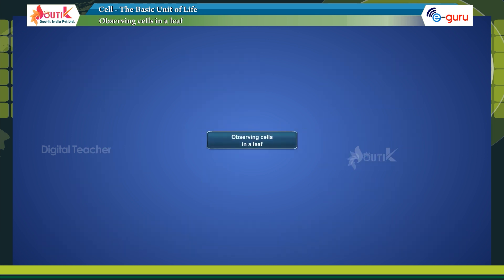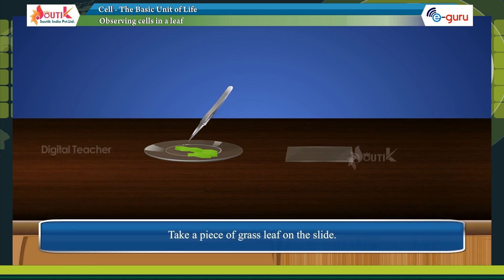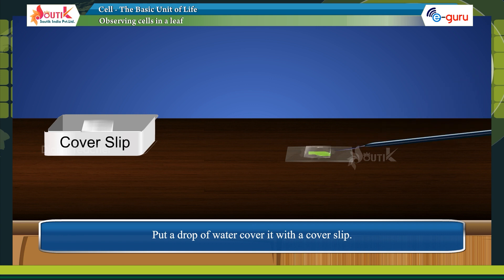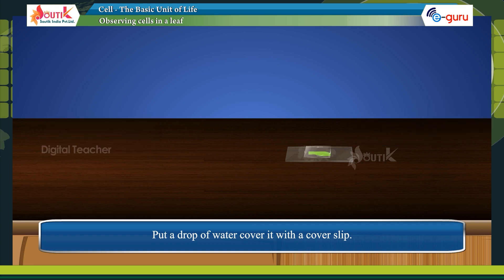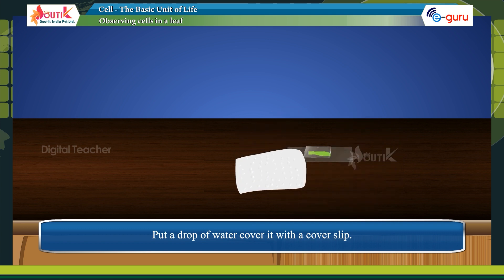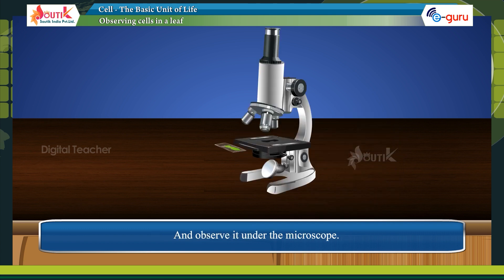Observing cells in a leaf. Take a piece of grass leaf on the slide. Put a drop of water. Cover it with a cover slip, and observe it under the microscope.